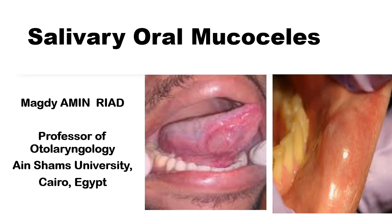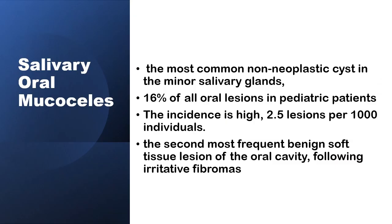As-salamu alaykum. This presentation is on salivary oral mucoceles. Salivary oral mucoceles are the most common non-neoplastic cysts in the minor salivary glands. They form about 16% of all oral lesions in the pediatric population, with an incidence as high as 2.5 lesions per thousand individuals in that age group. It is the second most frequent benign soft tissue lesion of the oral cavity, following only irritative fibromas.